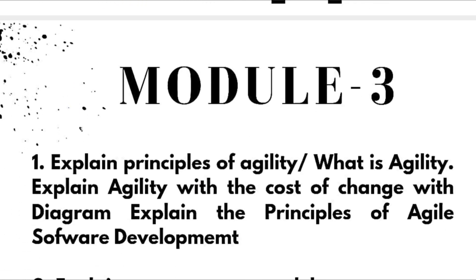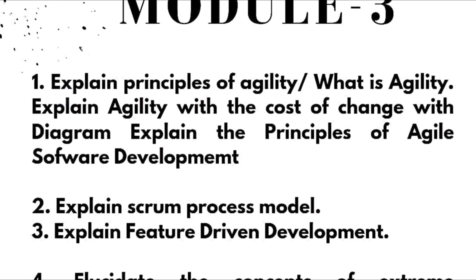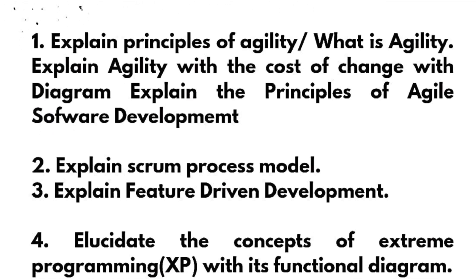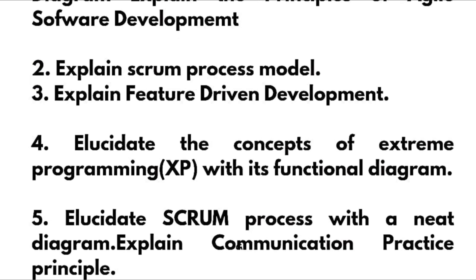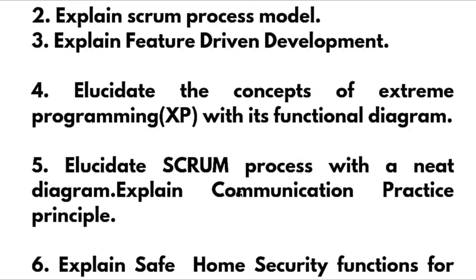Next, Module 3. Explain principles of agility — a super important question. What is agility, or sometimes they will simply ask what is agility. Explain agility with the cost of change with a diagram. Explain the principles of agile software development. Explain the Scrum process model. Explain feature-driven development. Elucidate the concepts of extreme programming with its functional diagram. And elucidate the Scrum process with a neat diagram.